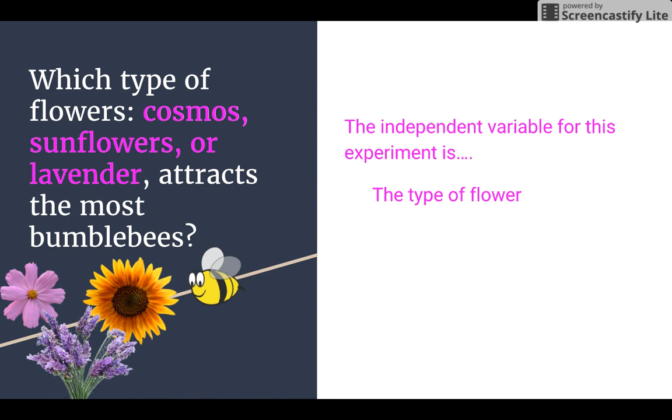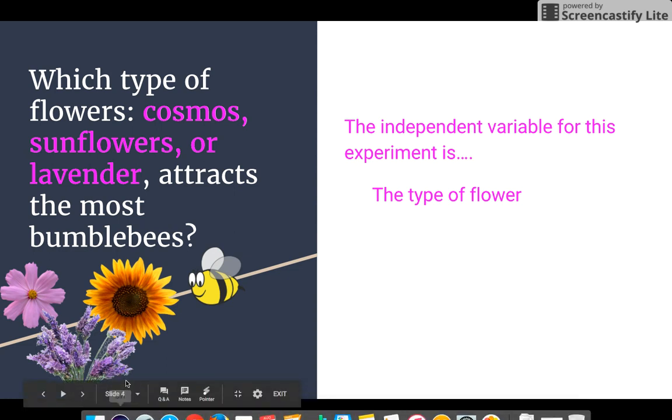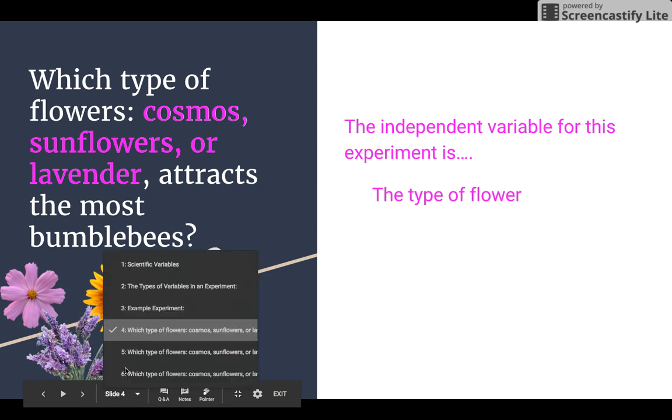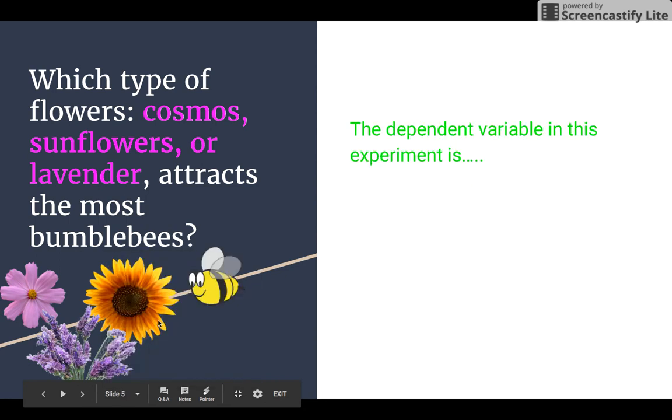So I want you to really think about when we are looking at experiments, start thinking, well, what am I changing? That's my independent variable. What am I going through and what am I trying to measure or record results? And that's your dependent variable.